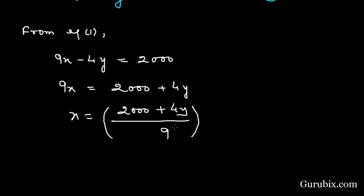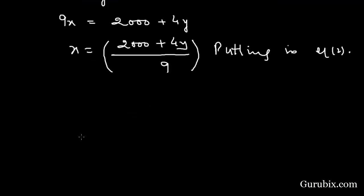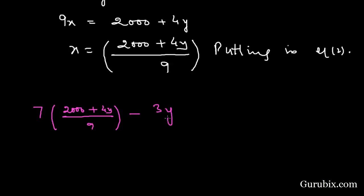Now we shall put this value of x in equation number 2. Equation number 2 is 7x minus 3y equals 2000. Substituting the value of x, we get 7 times (2000 plus 4y) over 9, minus 3y equals 2000.